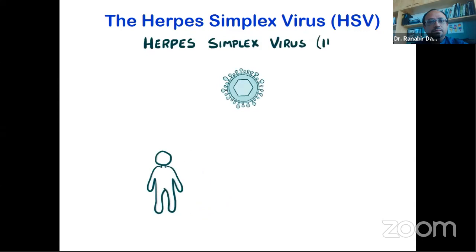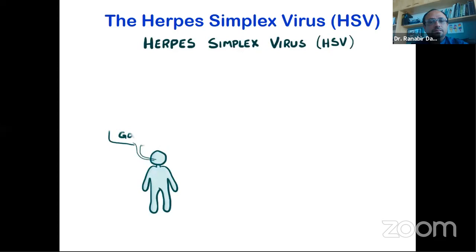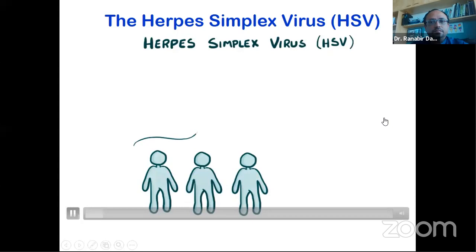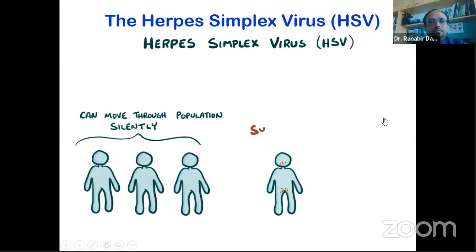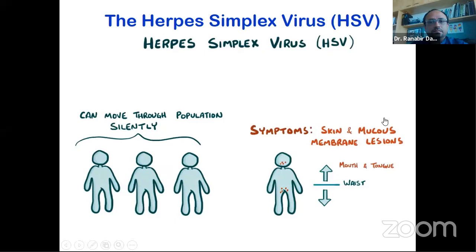Most of the time when herpes simplex virus infects a person, there are no symptoms. It usually moves from one person to another in the absence of symptoms, so it can spread through a population silently. Once in a while it can cause symptoms — typically skin and mucous membrane lesions, which can be divided into infections above the waist, mostly involving the mouth and tongue, and those below the waist, involving the genitals.